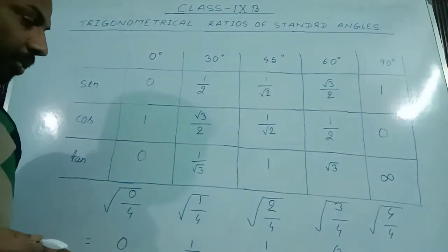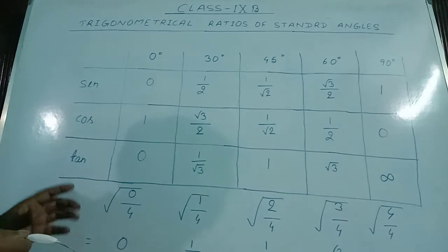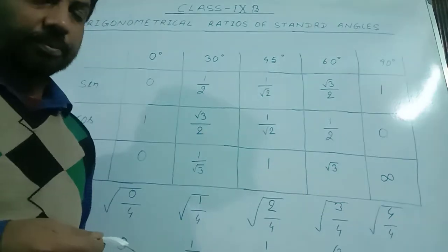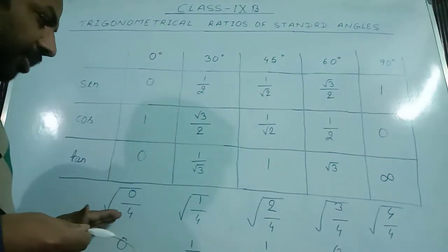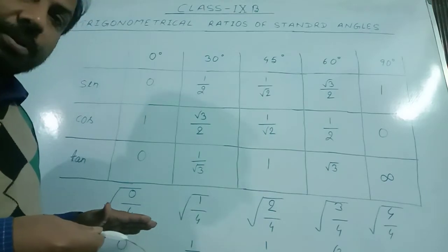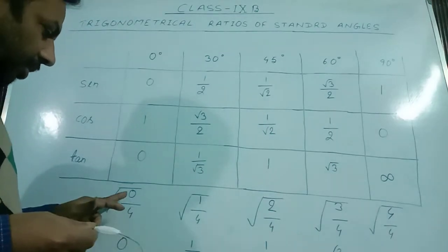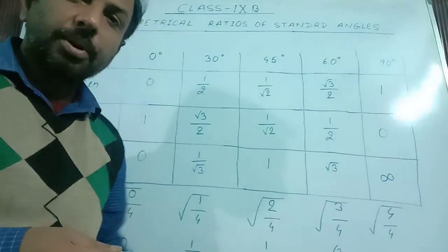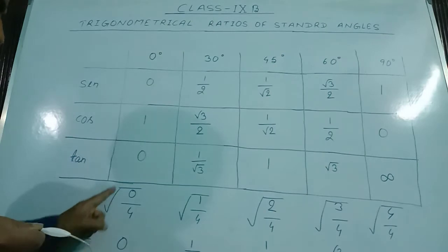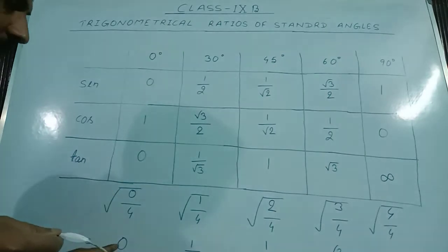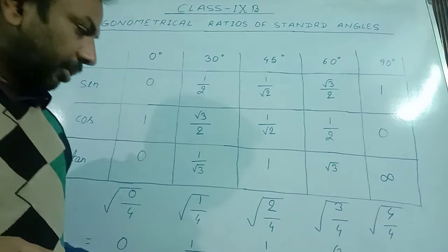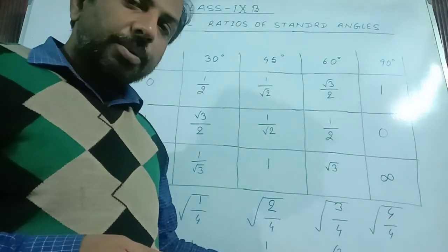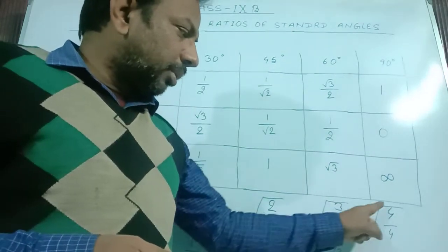Now here is a trick also given in the book. First, write the numbers 0, 1, 2, 3, 4. Second step: divide each of these numbers by 4, giving 0/4, 1/4, 2/4, 3/4, 4/4. Now find the square root of each: √(0/4) = 0, √(1/4) = 1/2, √(2/4) = 1/√2, √(3/4) = √3/2, and √(4/4) = 1.